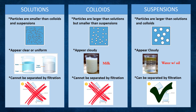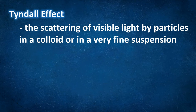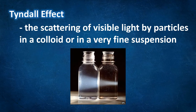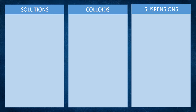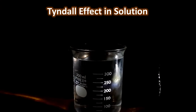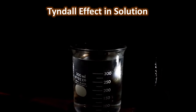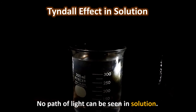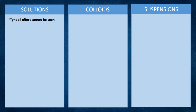The last property is the Tyndall effect. The Tyndall effect is the scattering of visible light by particles in a colloid or in a very fine suspension. It is only visible when there are large particles, like dust or mist, which can scatter light. In solutions, the Tyndall effect cannot be seen since their particles are too small to scatter light. Here is an experiment: a solution of water and vinegar shows no path of light.